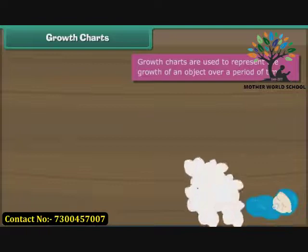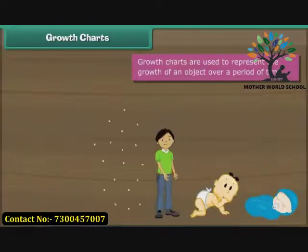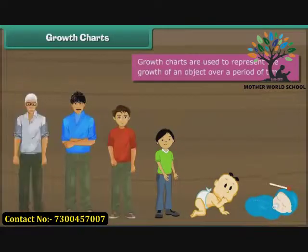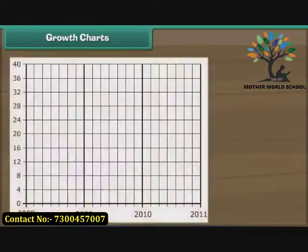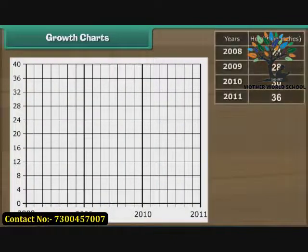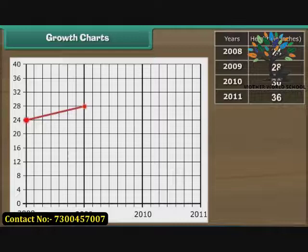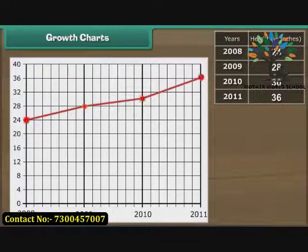Growth charts are used to represent the growth of an object over a period of time. Let us now trace the growth of Ravi over the past three years. We represent height vertically and years horizontally. In 2008, Ravi was 24 inches tall. Next year, he was 28 inches tall. In 2010, he grew to 30 inches. In 2011, he measured 36 inches. The growth chart of Ravi is ready.